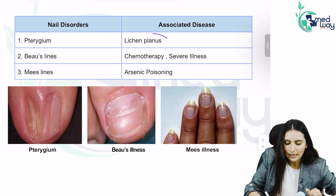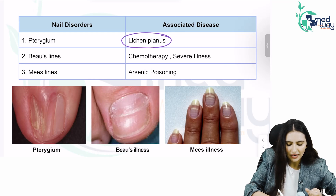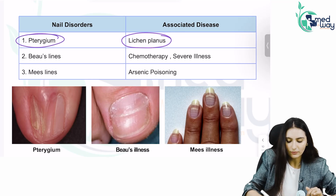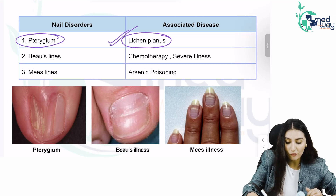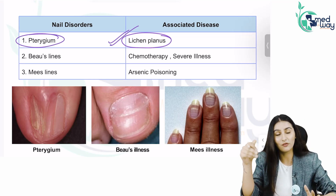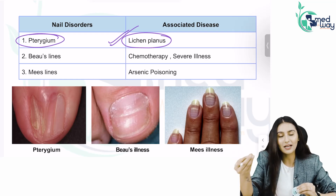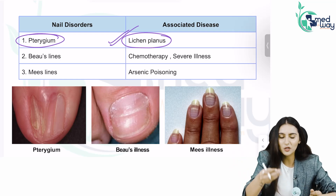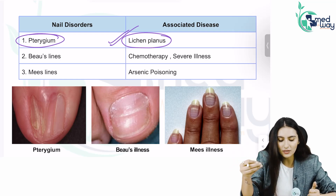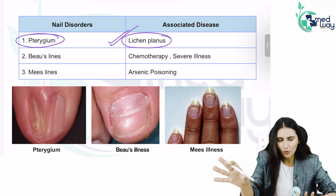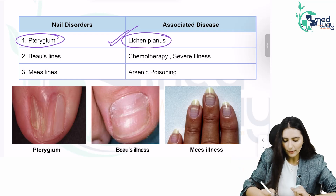First of all, in lichen planus, we have read that there is a pterygium. Please go back and read lichen planus because if you don't know this, most likely your answer will go wrong in the exam.